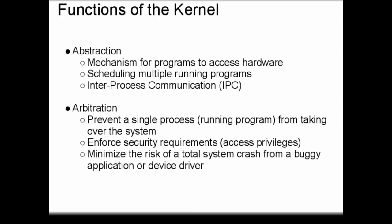The kernel provides two functions, the same two functions as any operating system: abstraction and arbitration. The kernel provides abstraction in the sense that it provides a mechanism for programs to access hardware, a way to schedule multiple programs on the system, and it provides some method for interprocess communication, or IPC — a way for programs to send messages to each other, to hardware devices, or out to the network.